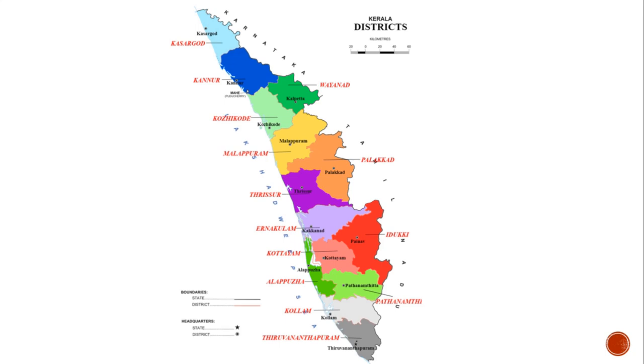Here, in this map of Kerala, the scale is given in the form of a line bar — that is, a graphical scale.